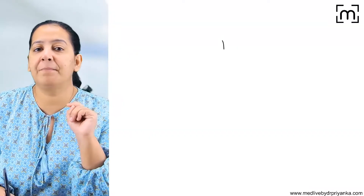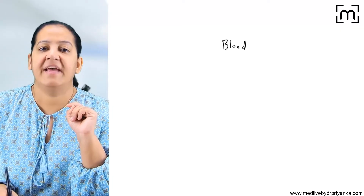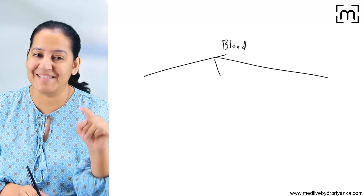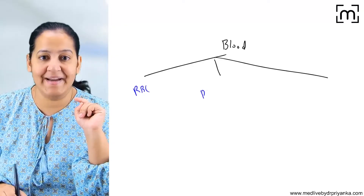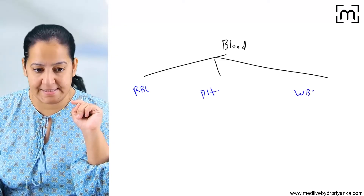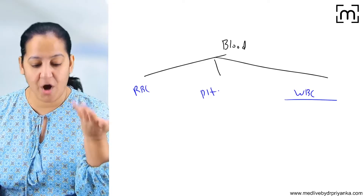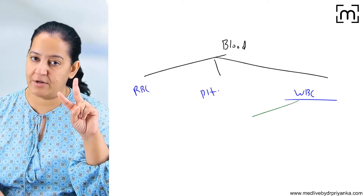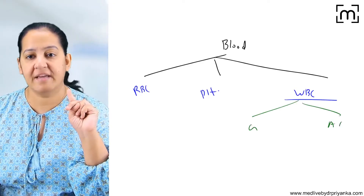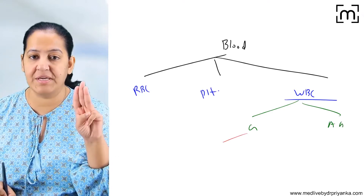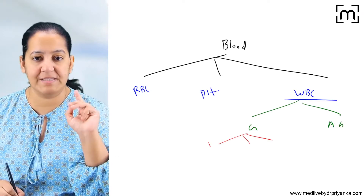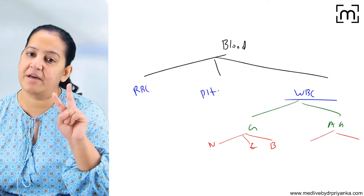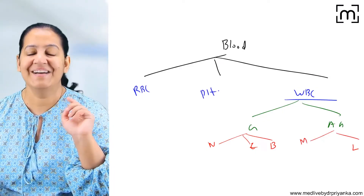There are three types of cells in the blood: RBCs, platelets, and WBCs. WBCs are the white blood cells. There are two types of WBCs — granulocytes and agranulocytes. Granulocytes have granules and include three types: neutrophil, eosinophil, and basophil. Agranulocytes don't have granules and are of two types: monocyte and lymphocyte.